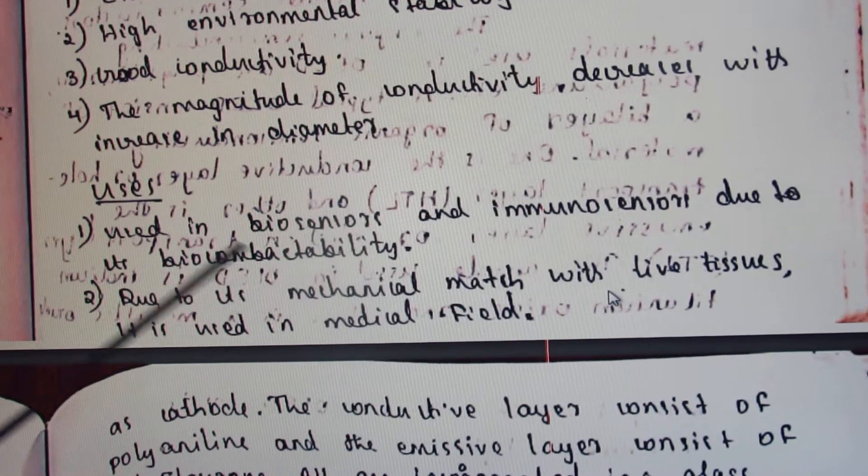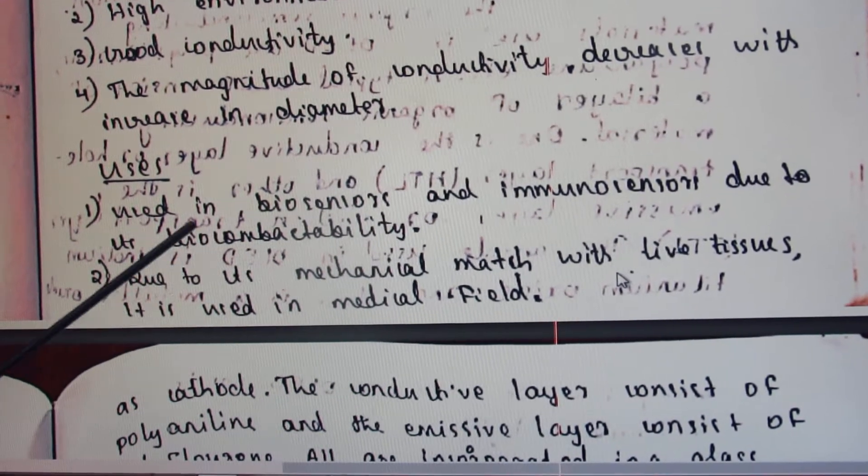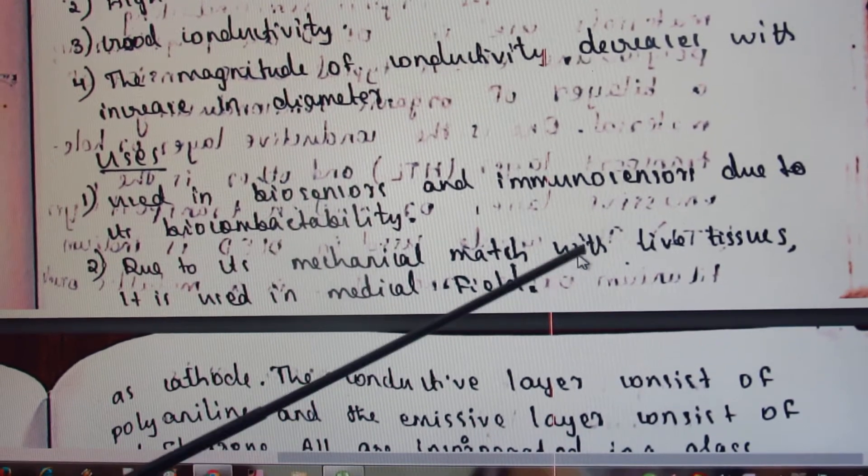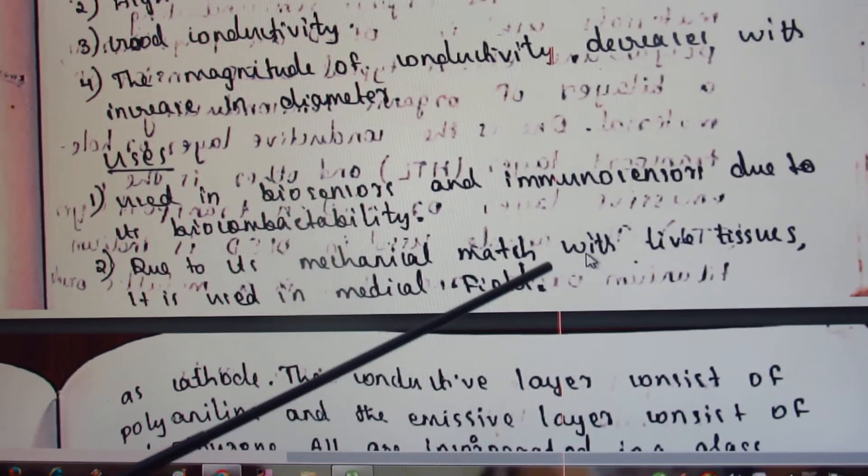Moving to the applications of polypyrrole: it is used in biosensors and immunosensors due to its biocompatibility. Due to its mechanical strength, it can be matched with live tissue, so it is used in the medical field.